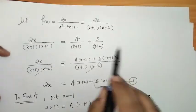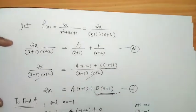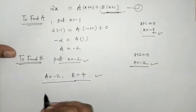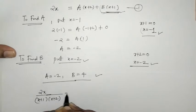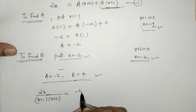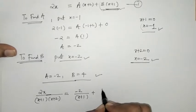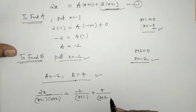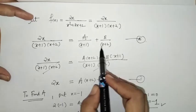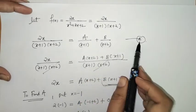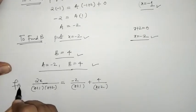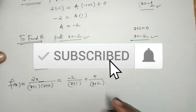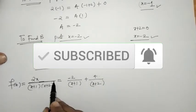Putting the values of A and B into the equation, we get: 2x/[(x+1)(x+2)] = -2/(x+1) + 4/(x+2). So we have resolved this function in partial fractions.